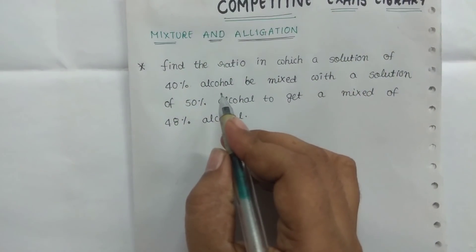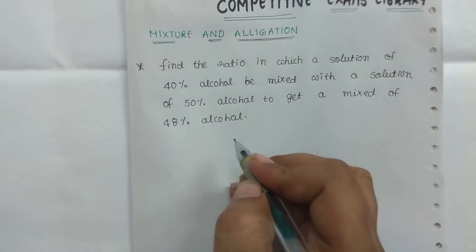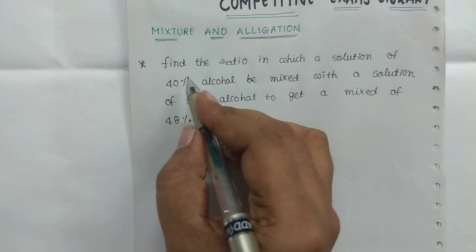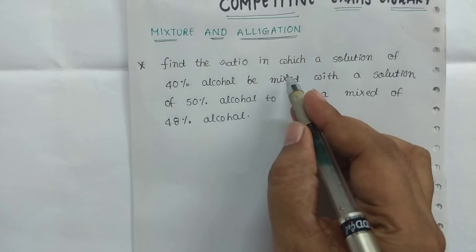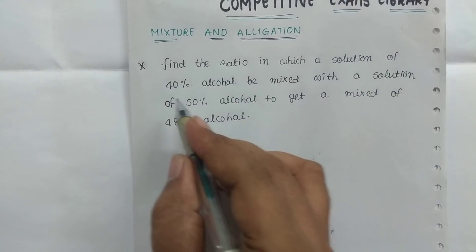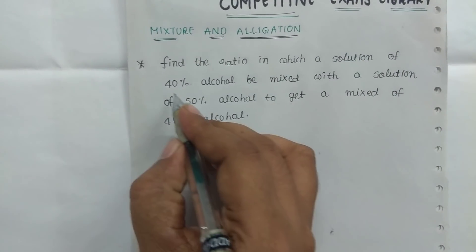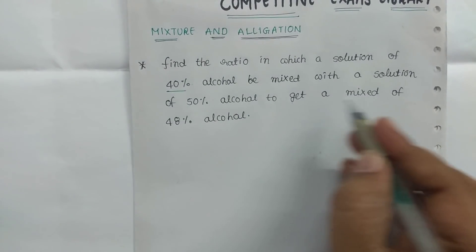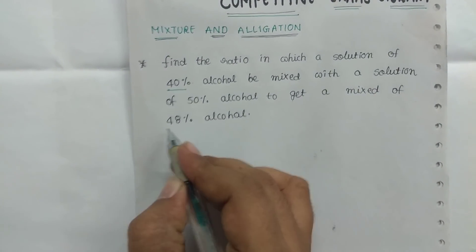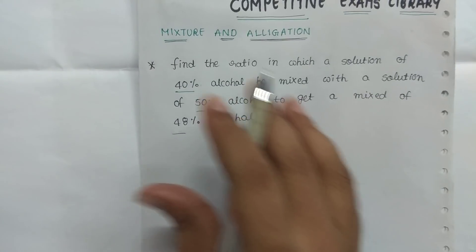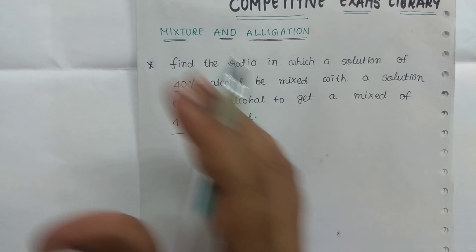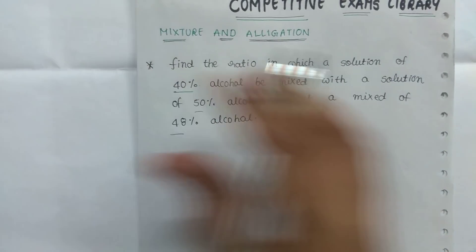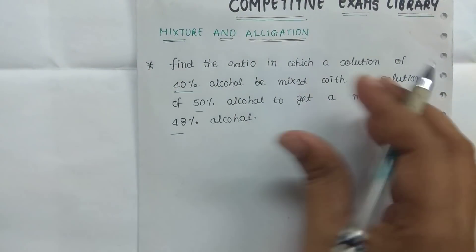OK, so let's find the ratio in which a solution of 40% is mixed with a solution of 50% alcohol to get a mixture of 48% alcohol.